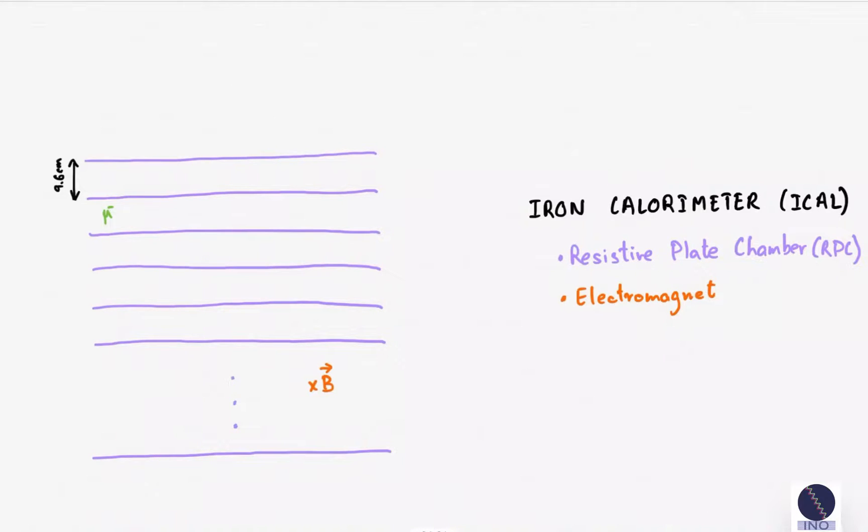Imagine the magnetic field to be into the screen. If a muon were to travel from top to down, its path will be curved in clockwise direction as per right-hand rule. The RPCs have pixels that will click when a muon passes through it. By looking at these clicks, we can know the track of the muon.